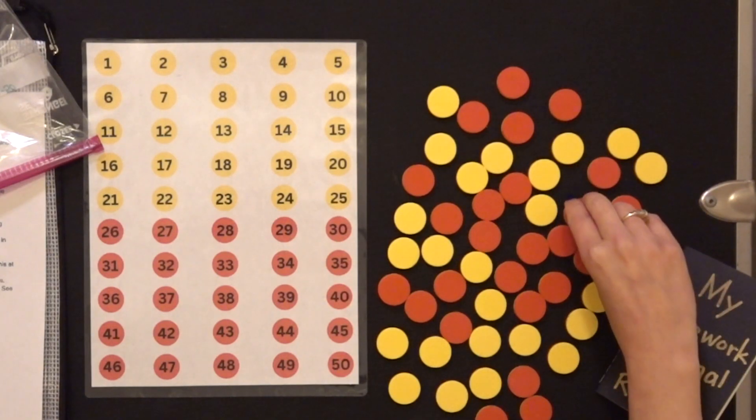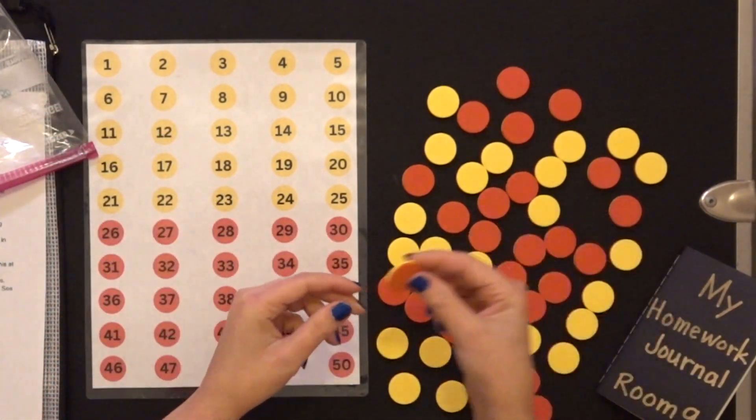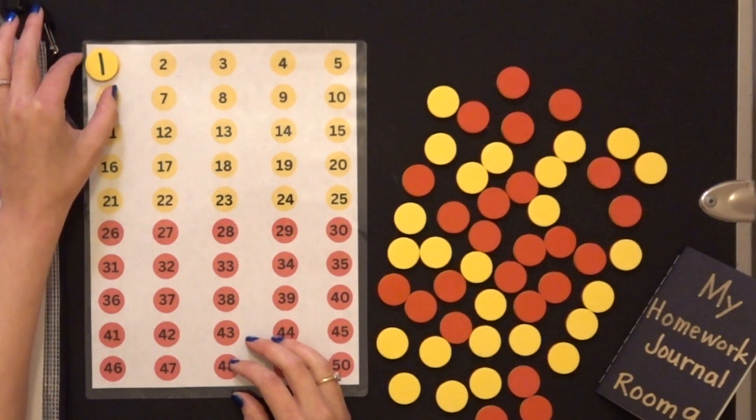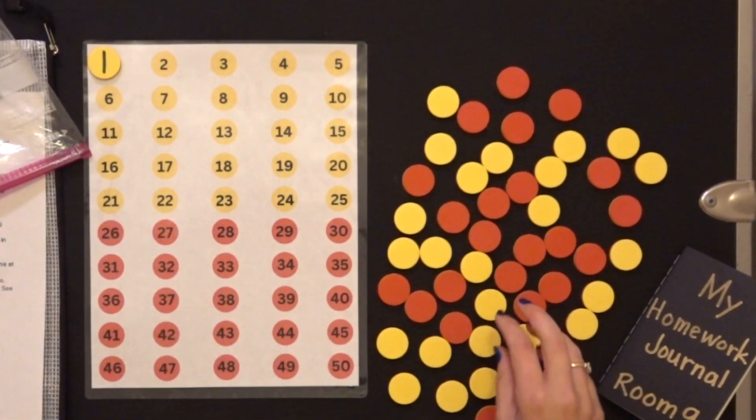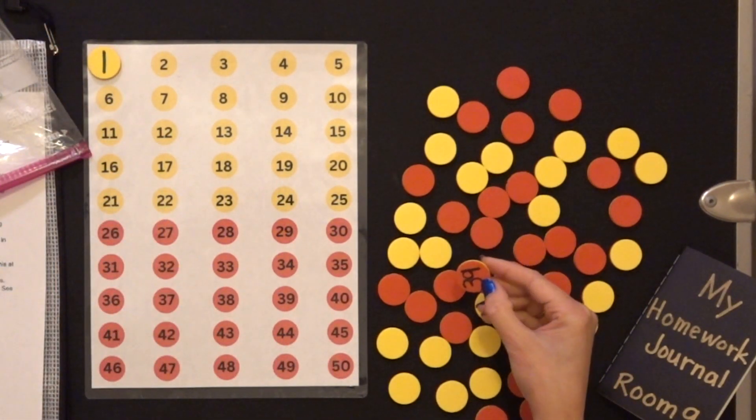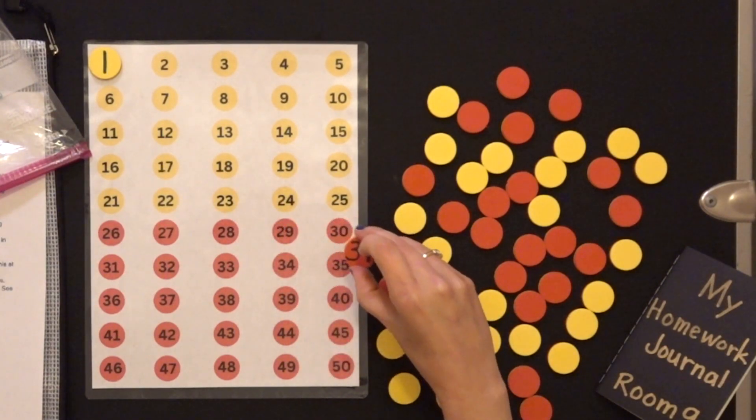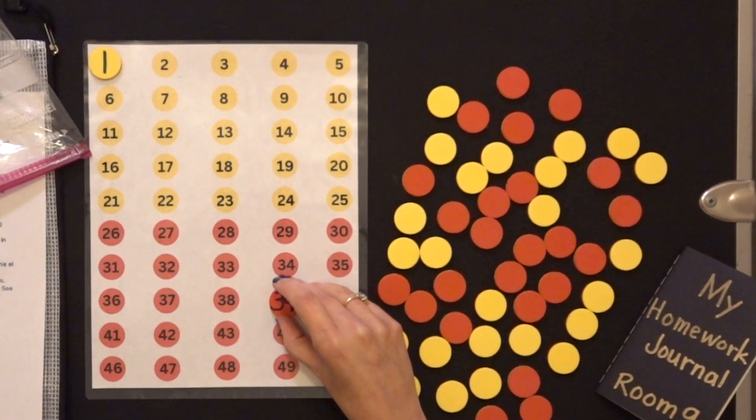So let's say I'm going to choose one red one, and I'm going to flip it over, and then I'm going to choose a yellow one. 39. So I'm going to find 39.